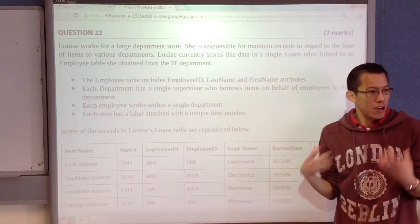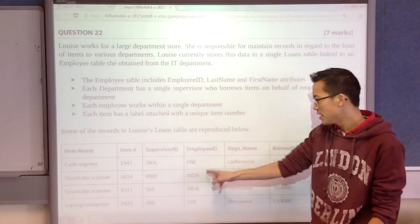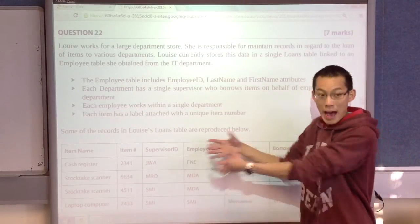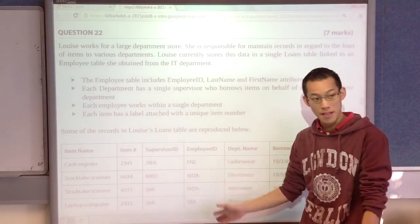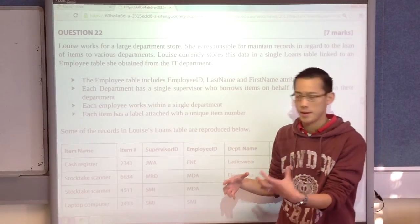But they are borrowing items for the employees. So when you're looking at who has borrowed this, it really is the employee who has the item and is using it. That'll be important later for when we work out our database scheme.